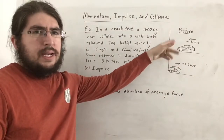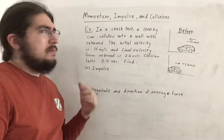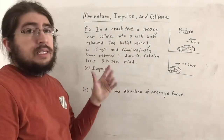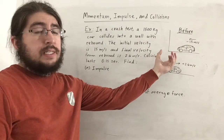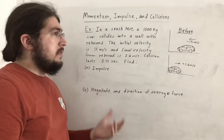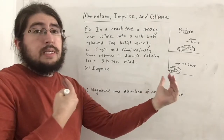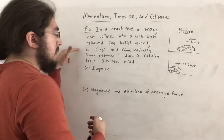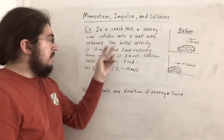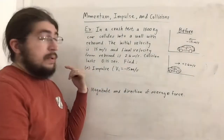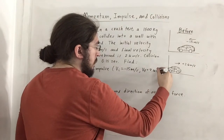Notice the velocities have sign conventions. The initial velocity is headed towards the wall, so delta x is decreasing, meaning velocity is negative: v_i = −15 m/s. The final rebound velocity is going in the opposite direction after crashing, so v_f = +2.6 m/s.